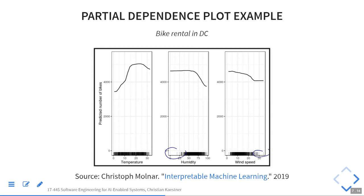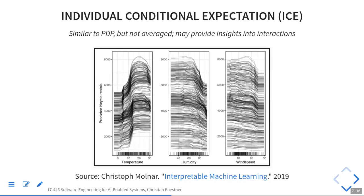Jake, do you remember how partial dependence plots work? Basically, you change a single variable and see how the output changes in response. You do this for a bunch of different values and average the results. You can also plot multiple individual value curves — if they're all parallel, that's what you'd expect in a linear model. If they're not all parallel, you may have interactions with other effects that you could explore further.